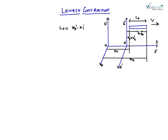L naught is the length of a rod in the rest frame, and is called the proper length. This is the key noting point: L naught is our proper length, which is the actual length of the rod placed in frame S dash. Here, rest frame means the observer's frame of reference.